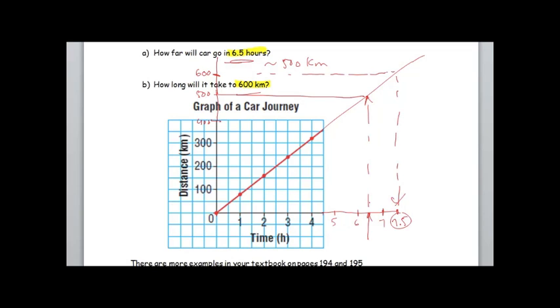It looks like maybe it lands at about 7.5 hours something like that. So how long will it take to go 600 kilometers. So we're using this graph to estimate values that are not actually given on this graph. I'll put a little squiggly line to state that's approximately 7.5 hours.